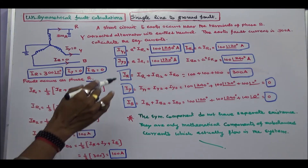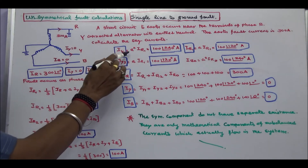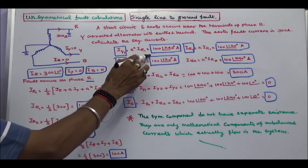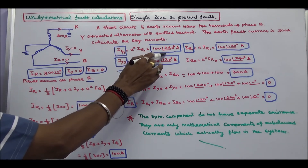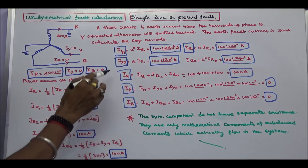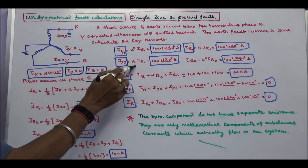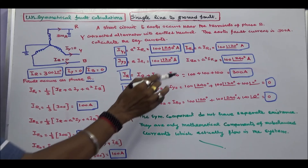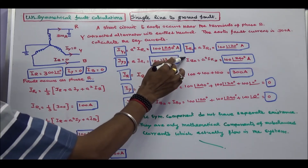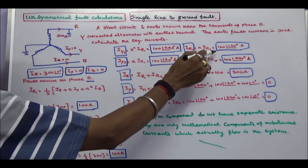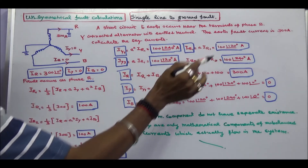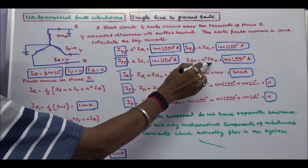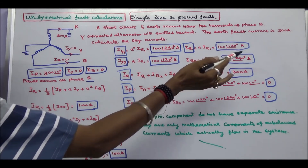Next we have to calculate Iy1. Iy1 is equal to A² into Ir1, that is 100 angle 240 degrees Amps. Iy2 is equal to A into Ir1, that is 100 angle 120 degrees Amps. Ib1 is equal to A into Ir1, that is 100 angle 120 degrees. Ib2 is equal to A² into Ir2, that is 100 angle 240 degrees.